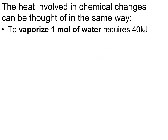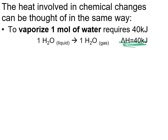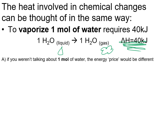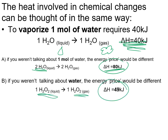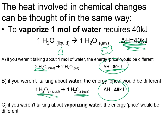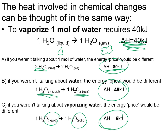Applying this to chemistry: to vaporize one mole of water takes about 40 kilojoules. We can write that as a thermochemical equation — it is endothermic, taking 40 kilojoules to turn liquid into gas. If you weren't talking about one mole, the cost would be different: two moles would take twice as much. If you weren't talking about water — say, hydrogen peroxide — the cost is different. And if you weren't vaporizing but doing something else, the cost also differs.